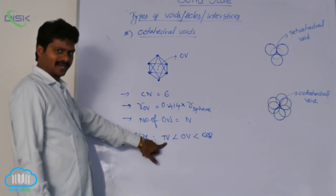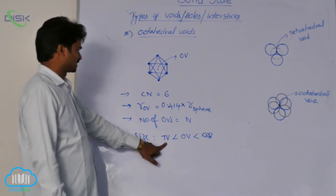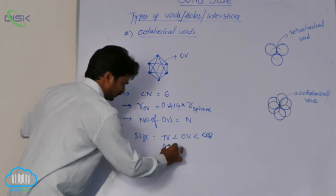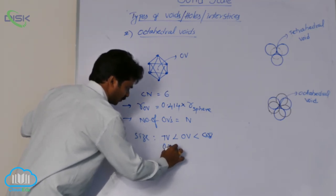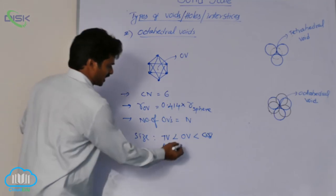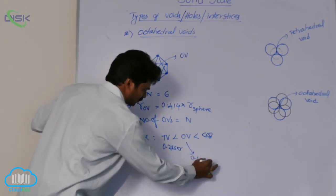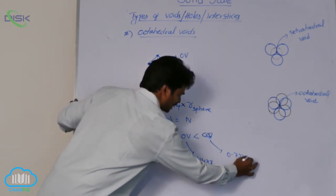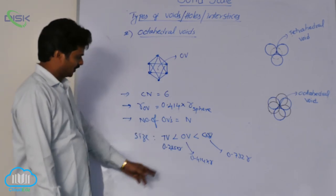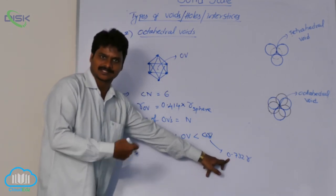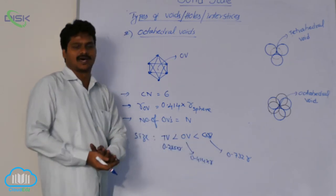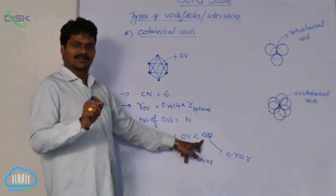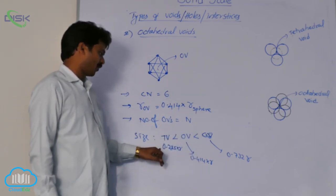The radius formulas for each void type are: tetrahedral void = 0.225 × radius of atom, octahedral void = 0.414 × radius of atom, and cubical void = 0.732 × radius of atom. Comparing these values confirms that the cubical void is the largest, but since it is possible only in a simple cubic system, we generally focus on tetrahedral and octahedral voids.